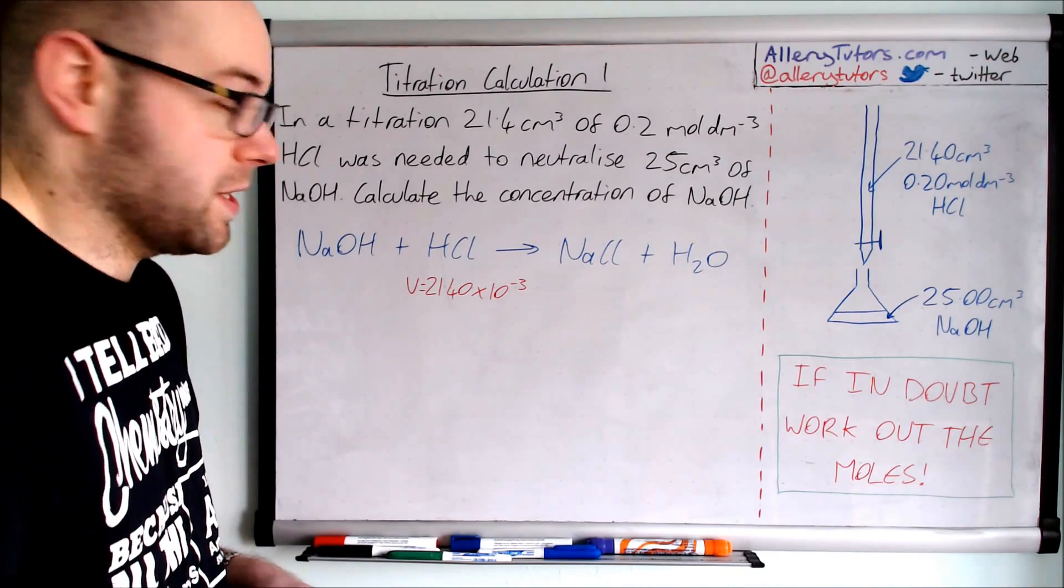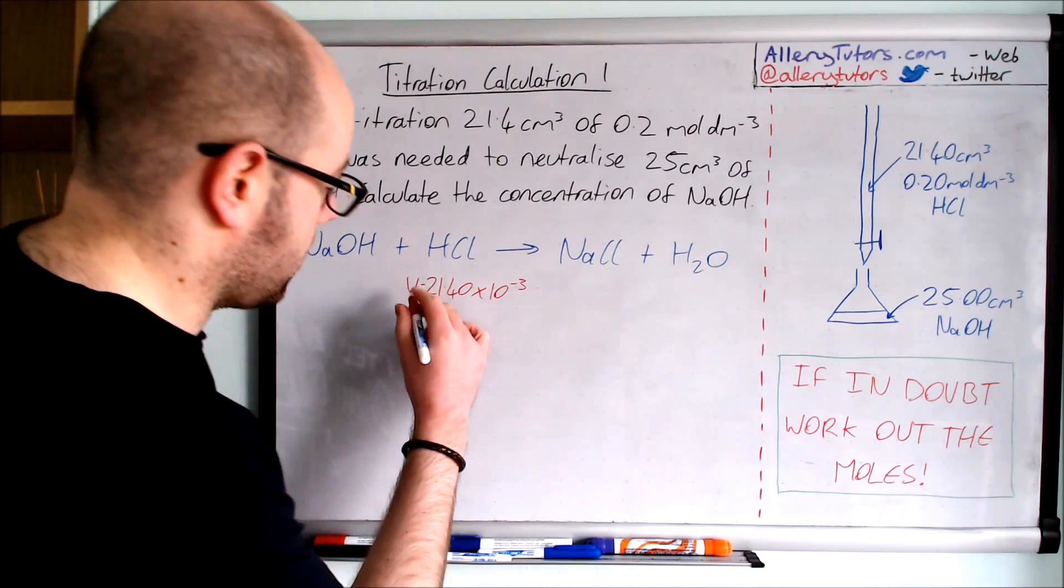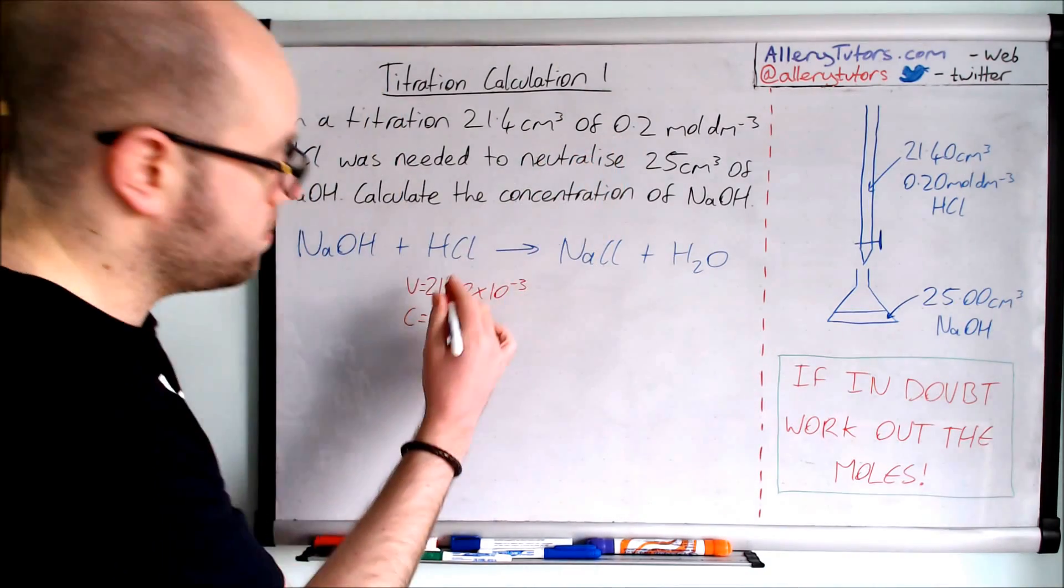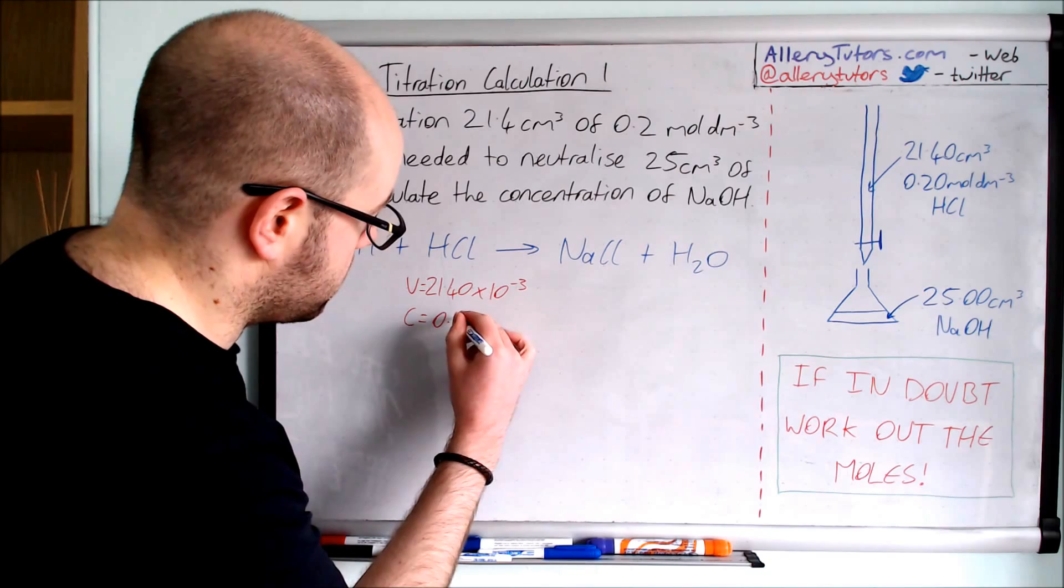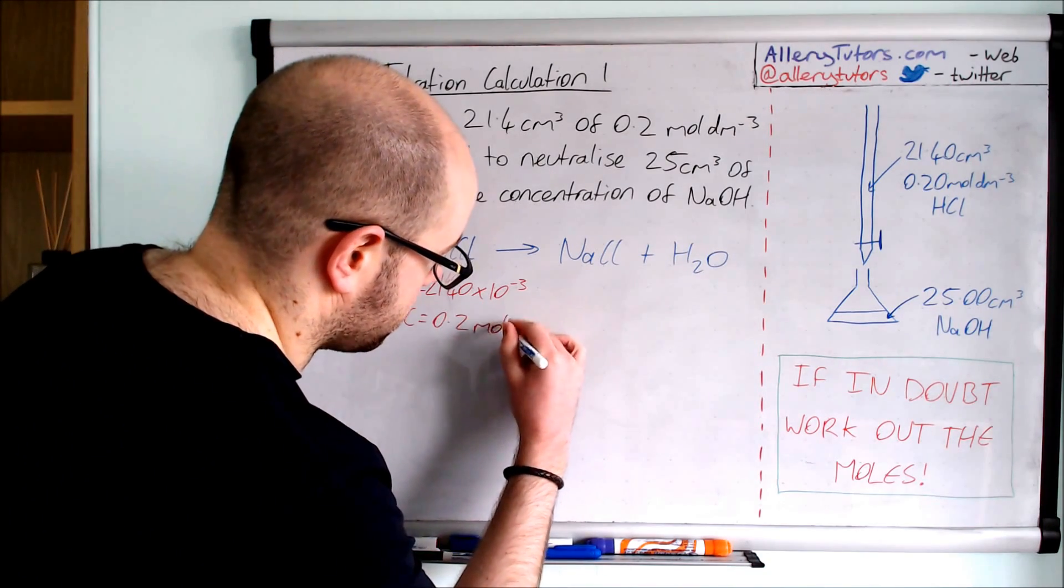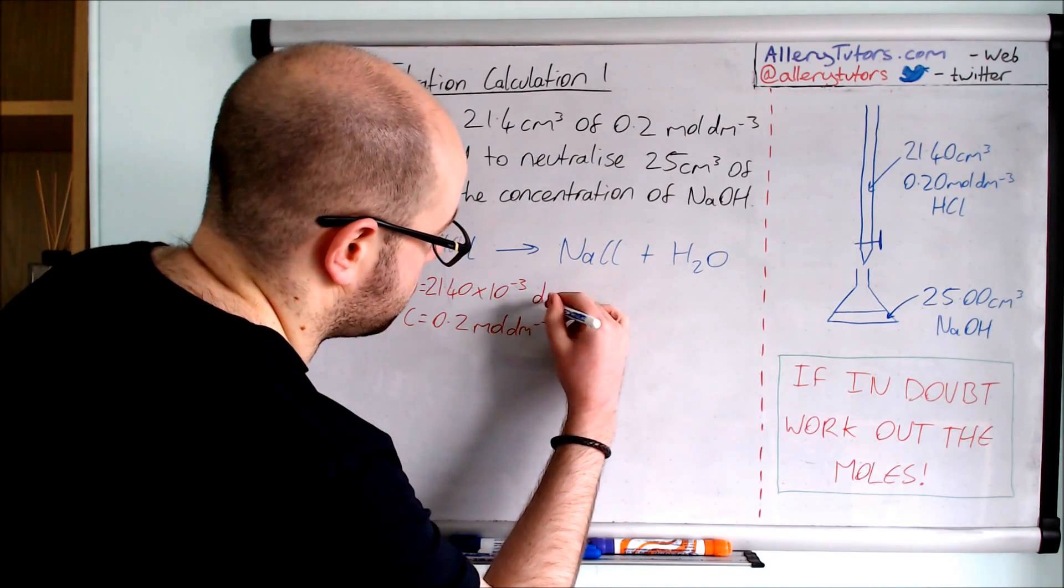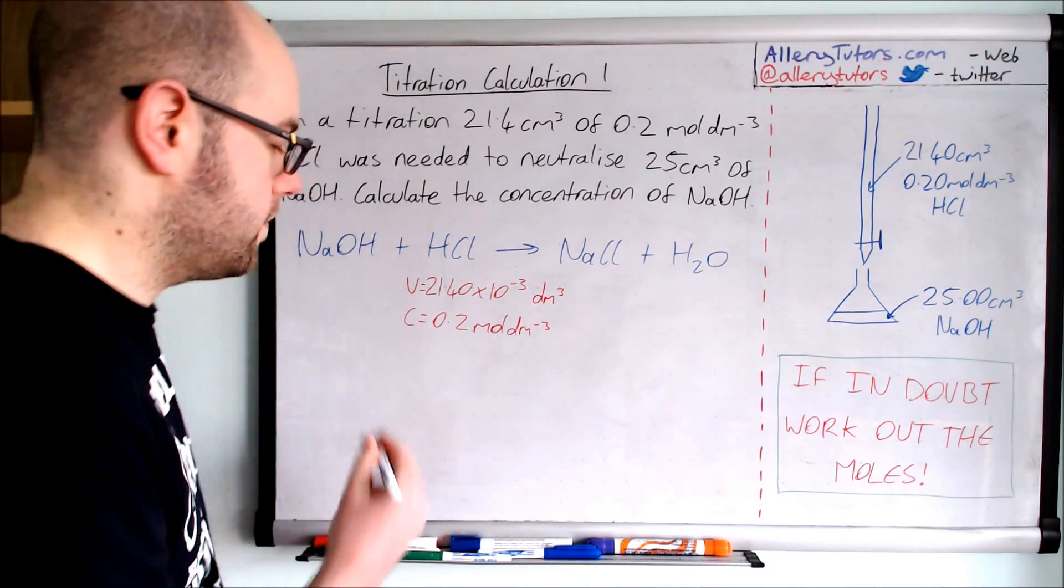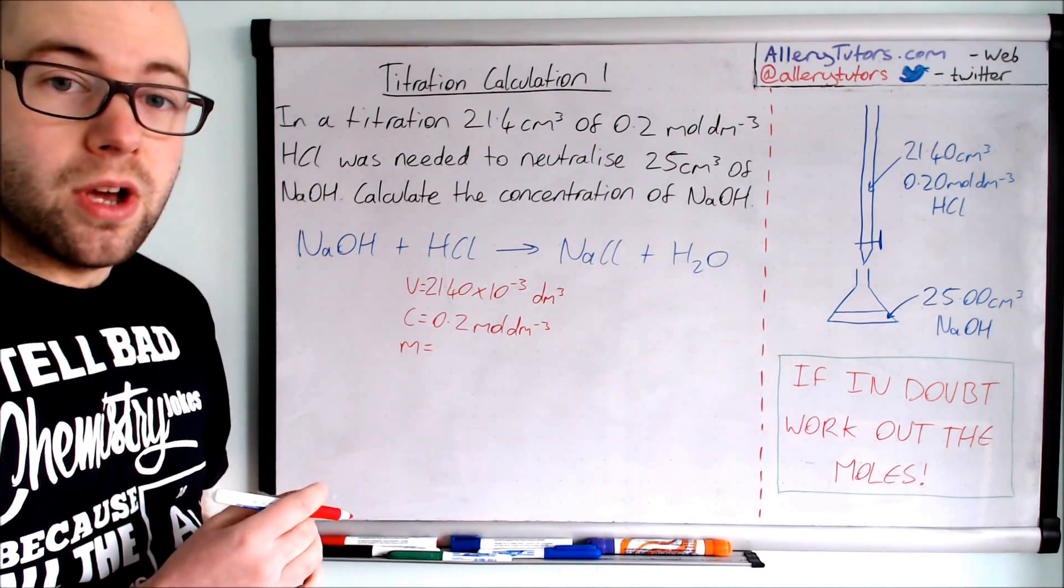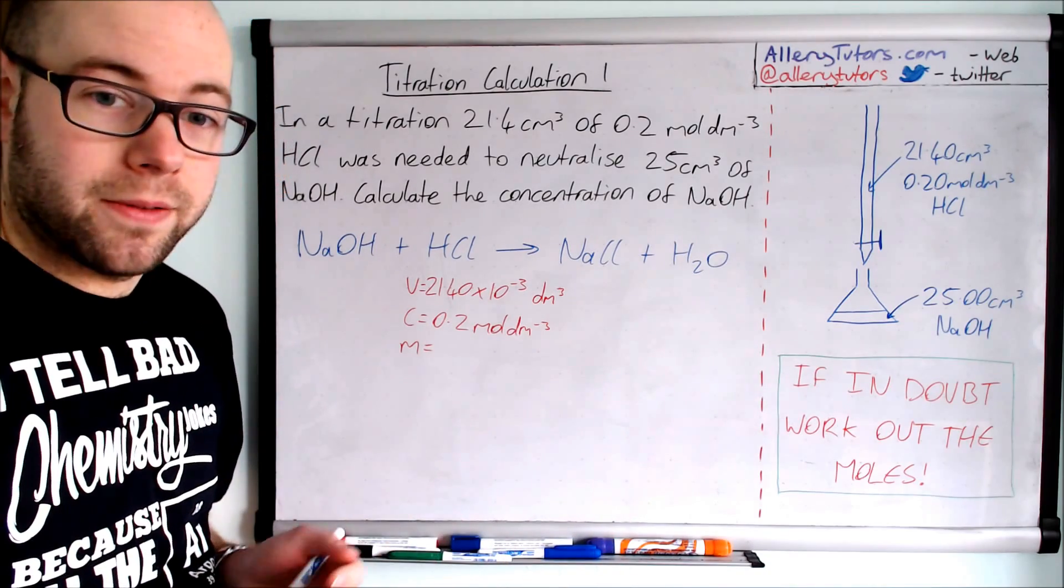So we've got our volume and then we need to work out our concentration. Our concentration is 0.2 moles per dm cubed. We don't need to do anything with that. The number of moles we actually don't know, we're going to work them out later on. So this is the first thing: if in doubt, work out the moles.